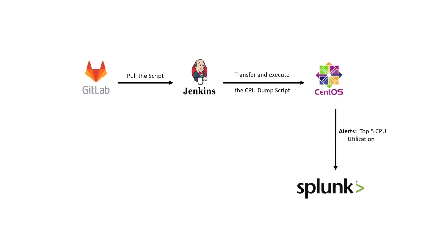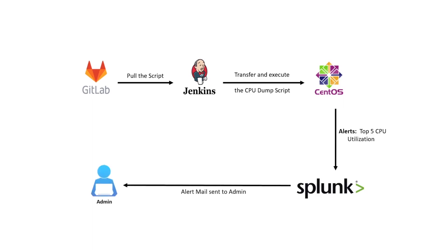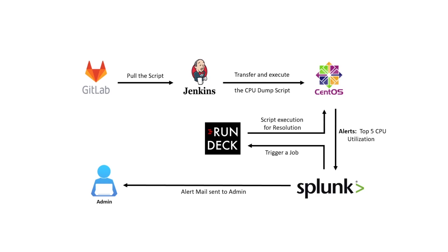After a few minutes, the top 5 CPU utilization alert message is shown on the Splunk dashboard for the Linux node. Now an alert email is sent to the admin user and Splunk will trigger the Rundeck job. In the next stage, the Rundeck job will execute the script to resolve the topmost CPU utilization service for the Linux node. Once the Rundeck job completes, CPU utilization will gradually come back to normal on the Linux node.